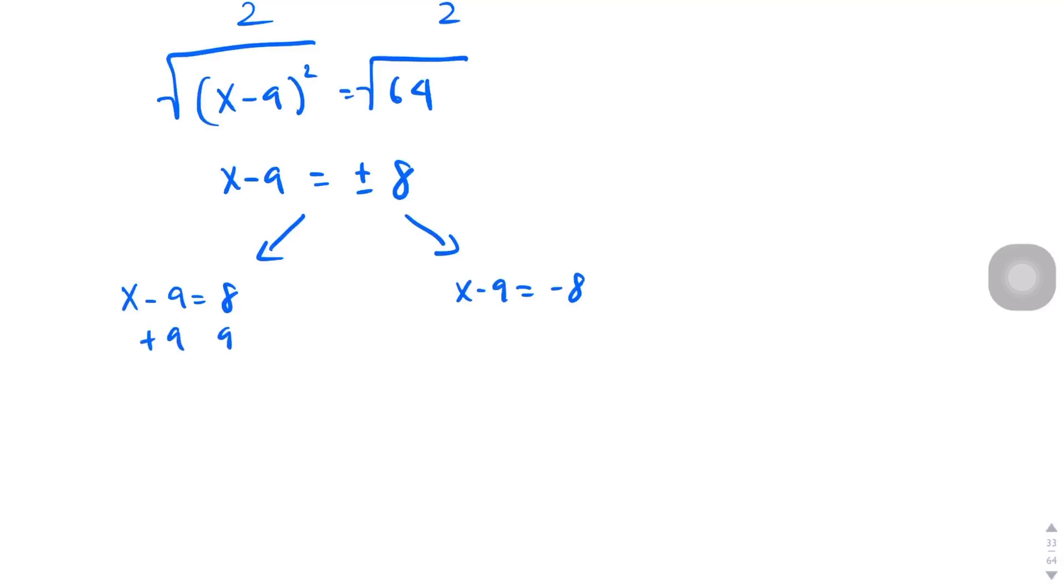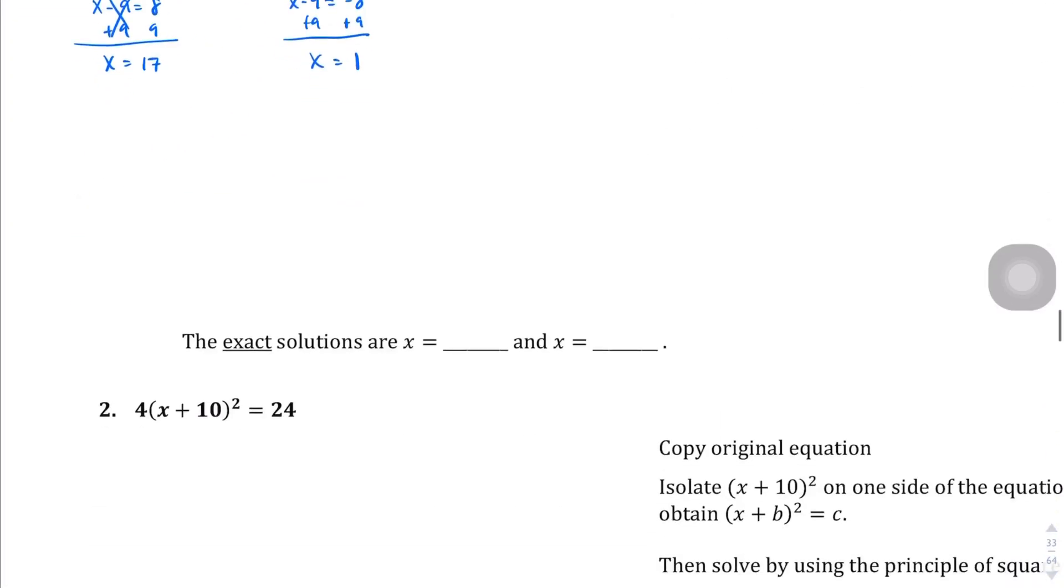So if we go and deal with that, we're going to add 9 to both sides for this one, and we get x equals 17. And over here when we do that, we get x equals 1. So your answers are x equals 17 and 1. So if we're writing the answer here, it's 1 and 17.